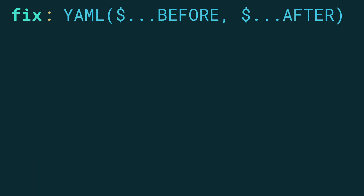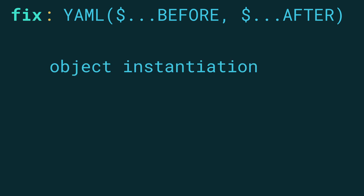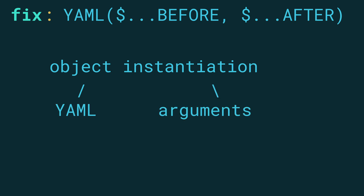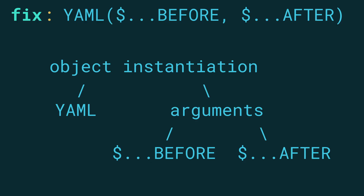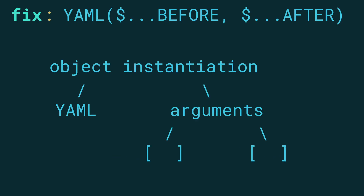Semgrep's solution to this is to manipulate code in the abstract syntax tree instead of in the text. First, it will parse the fix pattern into an abstract syntax tree. In this case, we have an object instantiation which consists of a class name and some arguments. The class name is yaml, and the argument list consists of two arguments — each of our metavariable ellipsis, so before and after. In the next step, the meta variables are replaced with their actual values as captured by Semgrep. And if one or both of these are empty lists, then the AST will show the correct amount of arguments.